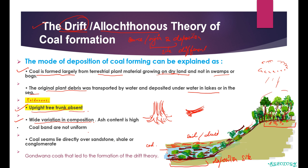Second, there is wide variation in composition — due to transportation, extra material is added, so there is high variation compared to in-situ. The ash content is high because mineral matter is quite high. The coal bands are not uniform, and coal seams lie directly over sandstone, shales, and conglomerate — whereas in in-situ theory the coal seams lie directly over soil. An important note: Gondwana coal is generally formed by the drift theory.